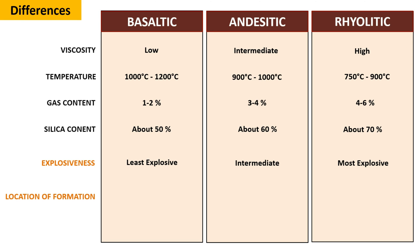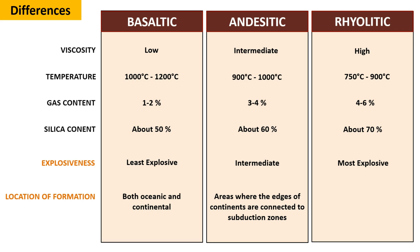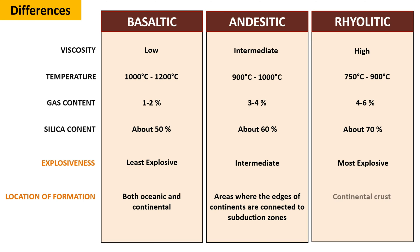Regarding location of formation, basaltic magma is formed in both oceanic and continental crusts. Acidic magma is formed in areas where the edges of continents are connected to subduction zones. Rhyolitic magma is formed in the continental crusts.